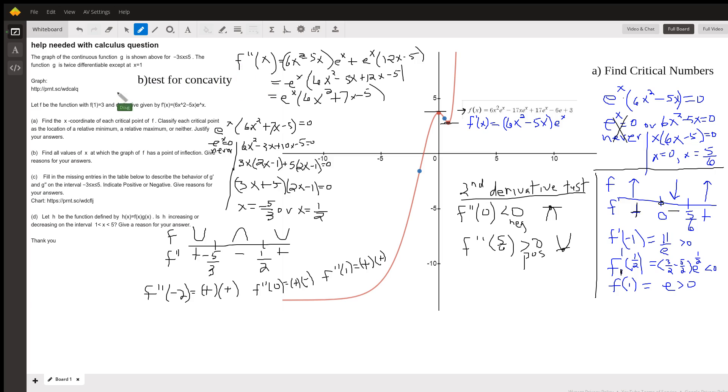Now, since we have to find the points of inflection in part b, we have to find the second derivative using the product rule. I've got the first function times the derivative of the second plus the second function times the derivative of the first. First, I see an e to the x in each of these terms, so I factor out an e to the x and combine the similar terms that remain inside these parentheses, 6x squared plus 7x minus 5.